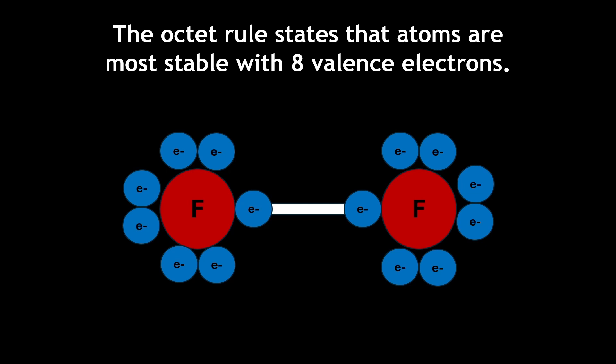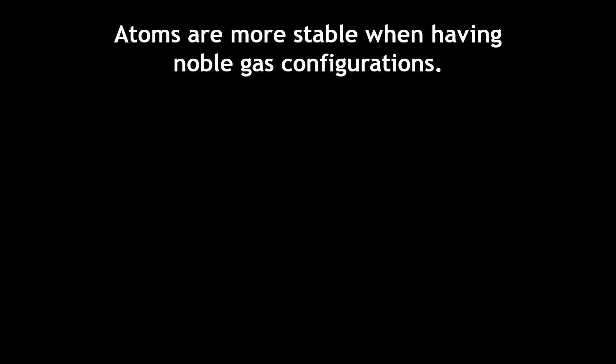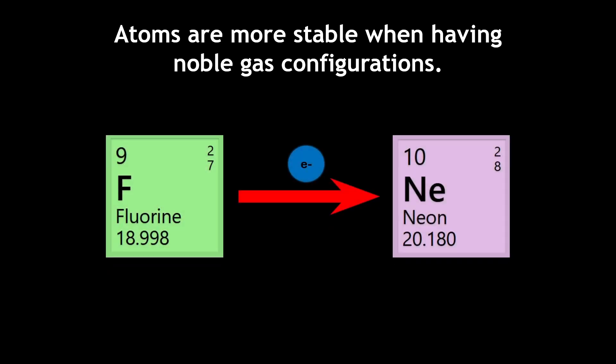The octet rule occurs because atoms tend to be more stable when having noble gas configurations. When fluorine gains one electron, it has the same configuration as neon, a noble gas.